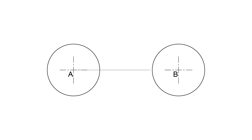Let us consider two circles with centers A and B to demonstrate this method. In order to draw this tangent precisely, we need to find the points of tangency on both circles. First, we draw a line from center A to center B. Next, erect two perpendiculars to AB at the endpoints A and B.